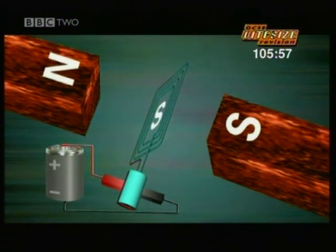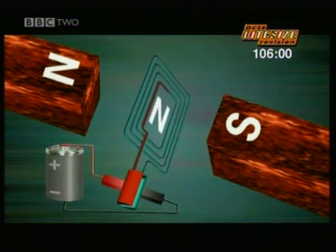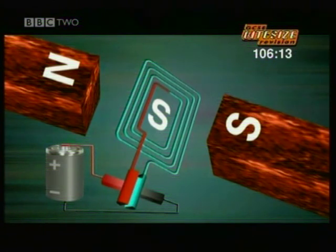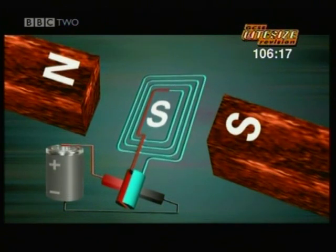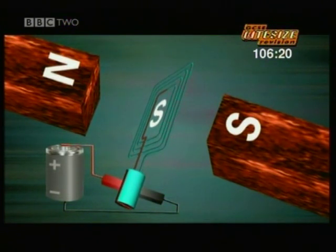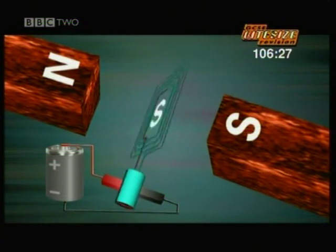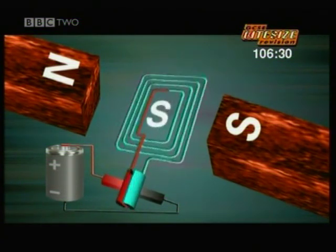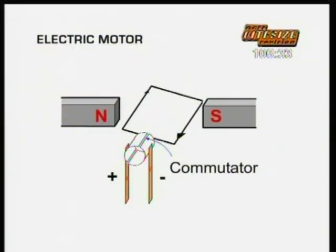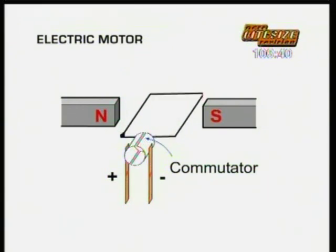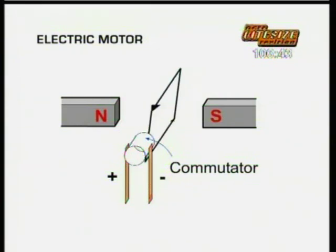But just at the right moment, the sliding contacts flip the direction of the current, so the magnetic field in the coil flips too. Now the coil's south pole is next to the south pole of the motor. Similar poles repel each other, so the coil is pushed away and it keeps on turning. Half a turn later, the contacts flip the current again, so the cycle repeats. The coil never quite gets to where it wants to be and it will keep on spinning until the battery runs out. Reversing the current flow at the right moment causes the loop to rotate.